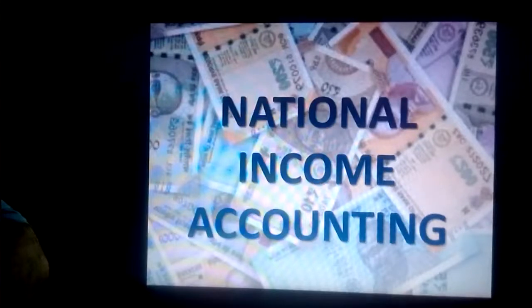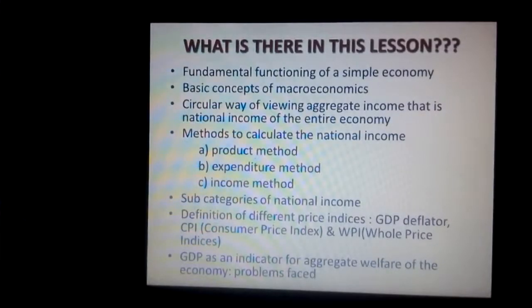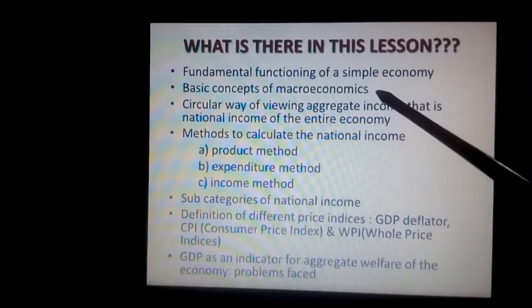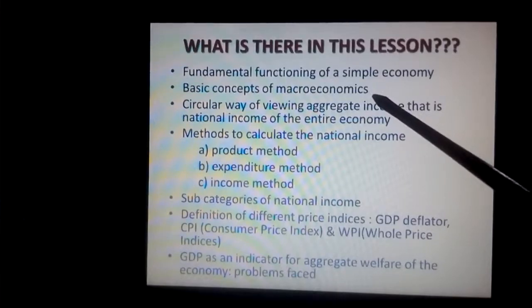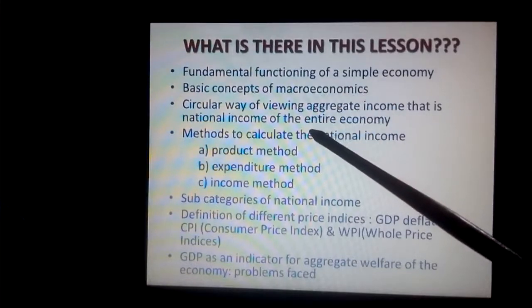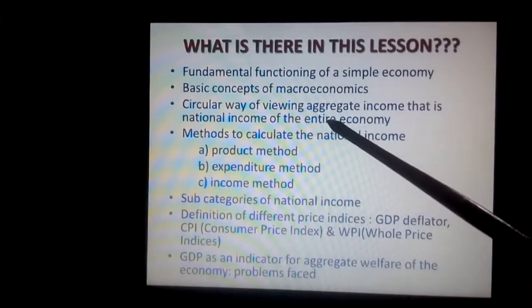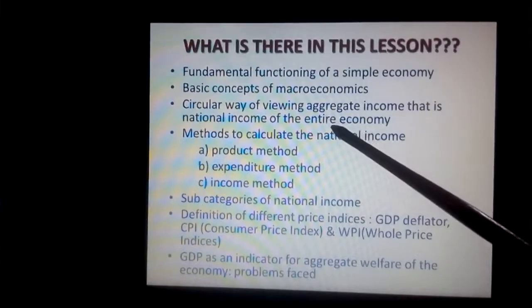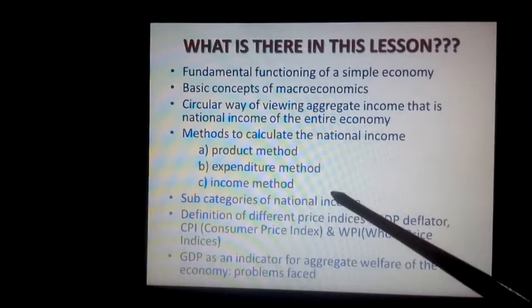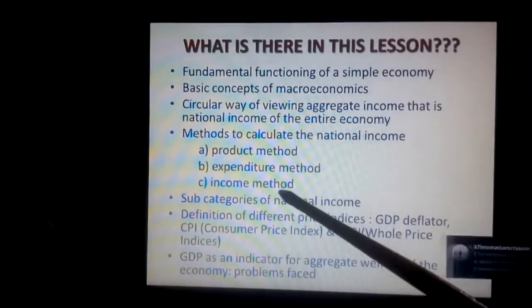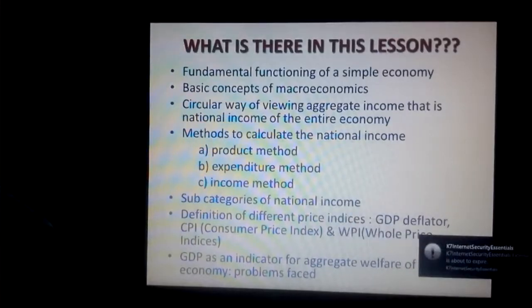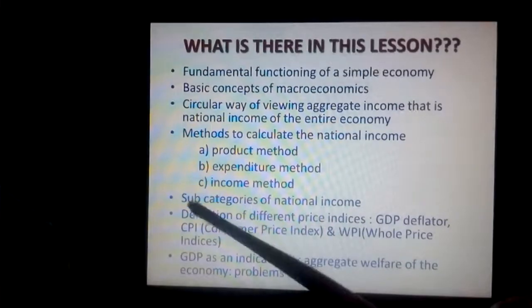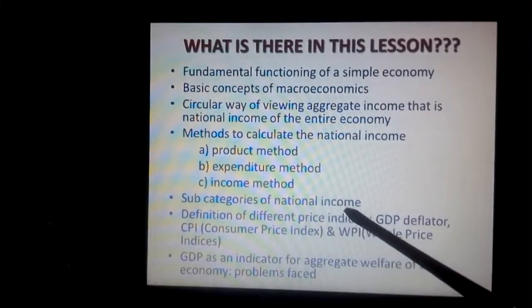This chapter deals with what is national income and how it is calculated. We will discuss what is a simple economy and its fundamental functions. In section 2.1 we will explore some basic concepts of macroeconomics. In section 2.2 we will understand how to calculate the aggregate income of the nation using the circular method. The other section deals with the three ways to calculate national income, namely product method, expenditure method and income method. Section 2.3 describes the various categories of national income such as GDP deflator,